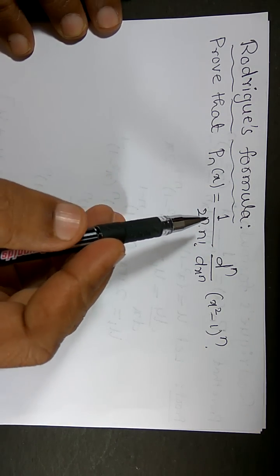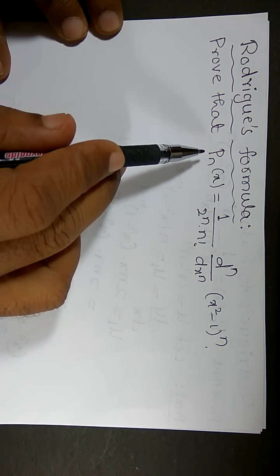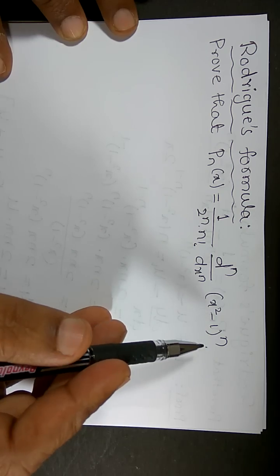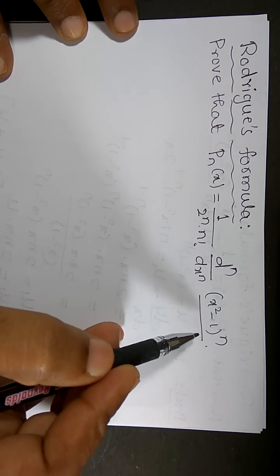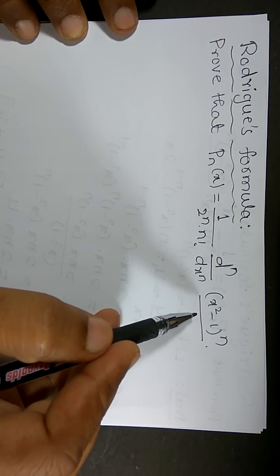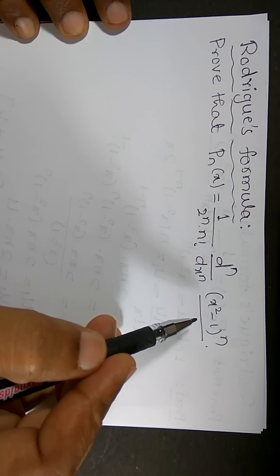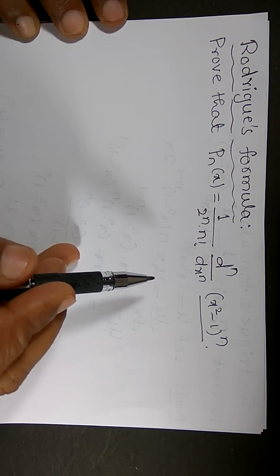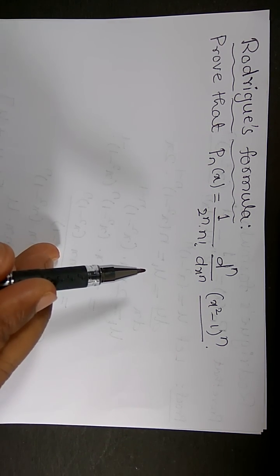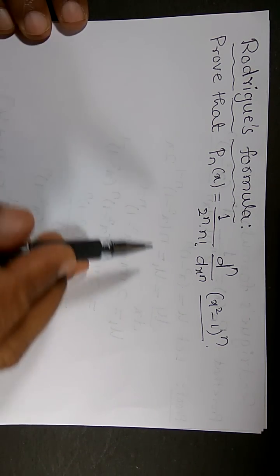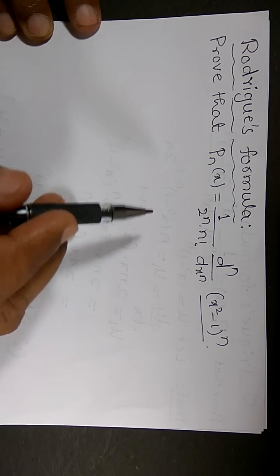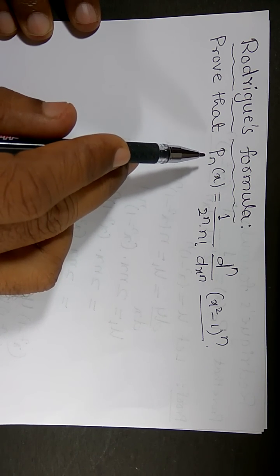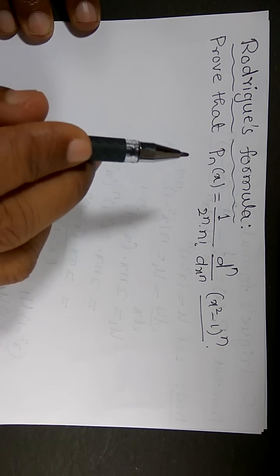Hello friends. Now I want to prove Rodrigues' formula. What is Rodrigues' formula? The left hand side is equal to the right hand side, or P_n(x) is equal to 1 divided by 2 to the power n into n factorial, times the nth derivative of (x squared minus 1) to the power n. How do we prove this? The proof is very simple. I can take this function as u, find out the nth derivative, and show that it satisfies the Legendre differential equation. So P_n(x) is equal to some constant factor k into u_n.